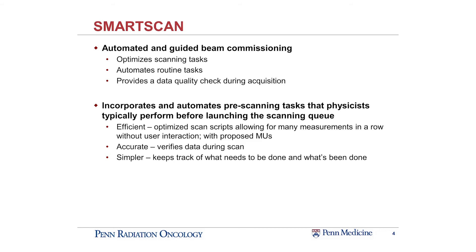The Smart Scan software component really automates and guides the user in the whole scanning process. It will optimize your scanning queues, it automates some routine tasks that we typically have to do in the beginning — background, CAX check, prelim scans — and also provides a data quality check that's routinely done during the scanning acquisition, so it constantly is looking at your data and telling you whether your data is good or not. It's really an efficient tool that incorporates and automates all your pre-scanning tasks that we physicists like to perform before launching your scanning queue.